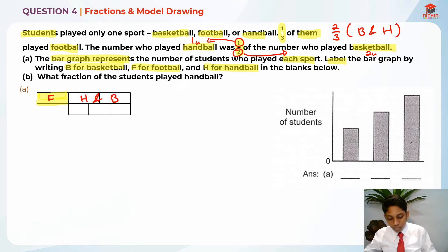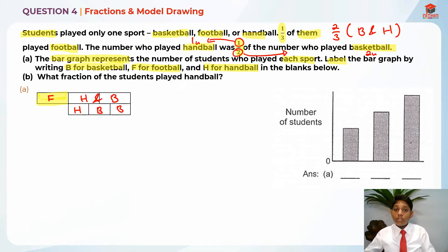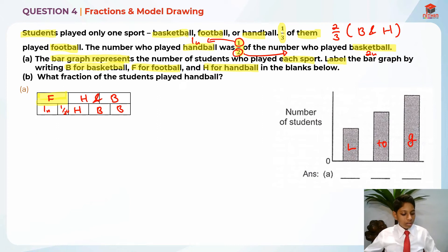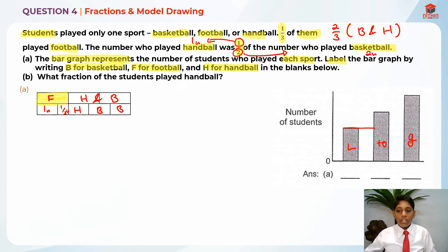We know that handball is one unit while basketball is two units. And how many units is football? Because if we subdivide one part, we need to subdivide the other part as well. So football is actually one and a half units. Now we need to figure out which is the least. The least should be handball, because it is shorter than the rest and has only one unit, so handball goes in blank number one.